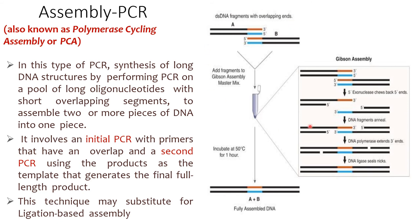Assembly PCR, also known as polymerase cycling assembly or PCA, involves synthesis of a long DNA structure by performing PCR on a pool of long oligonucleotides with short overlapping segments to assemble two or more pieces of DNA into one piece. It involves an initial PCR with primers that have an overlap and a second PCR using the product as a template to generate a final full-length product. This technique may be a substitute for ligation-based assembly.